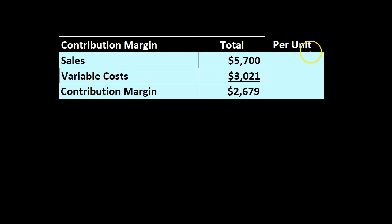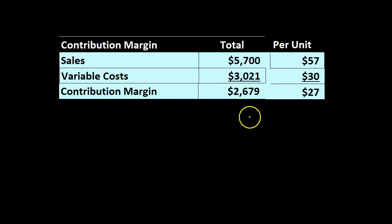For the contribution margin per unit example: sales are $57 per unit, variable costs are $30 per unit — both known from our CVP analysis. Subtracting: $57 minus $30 gives us $27. So we have the contribution margin in total and the contribution margin per unit. Now we need to consider what the contribution margin ratio is.